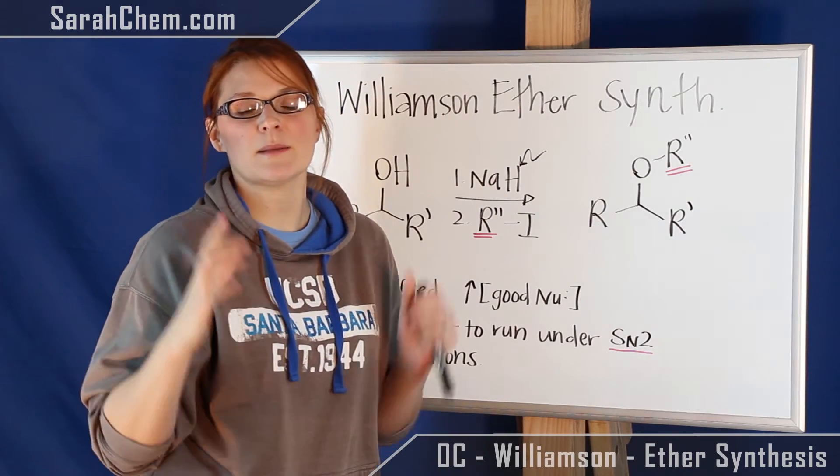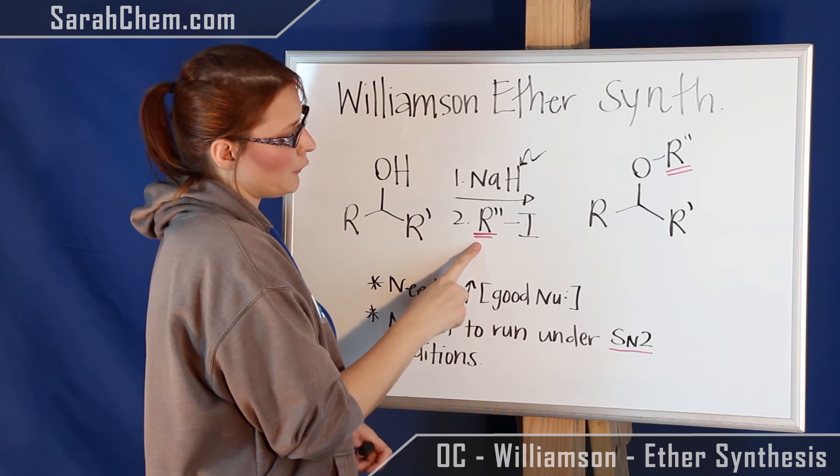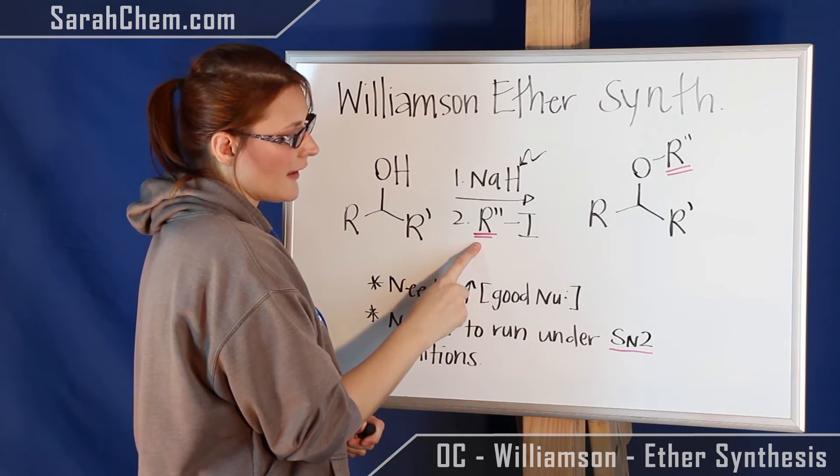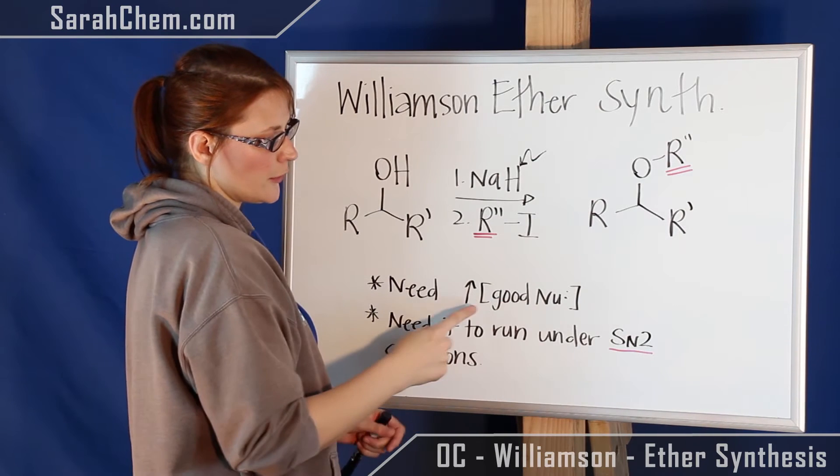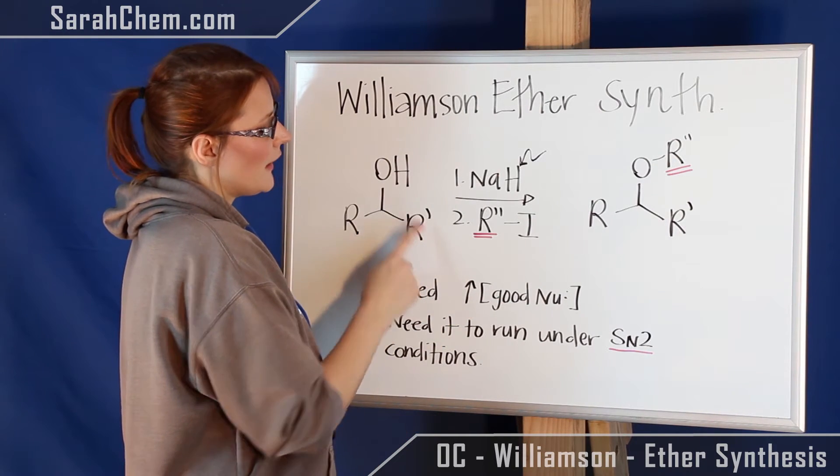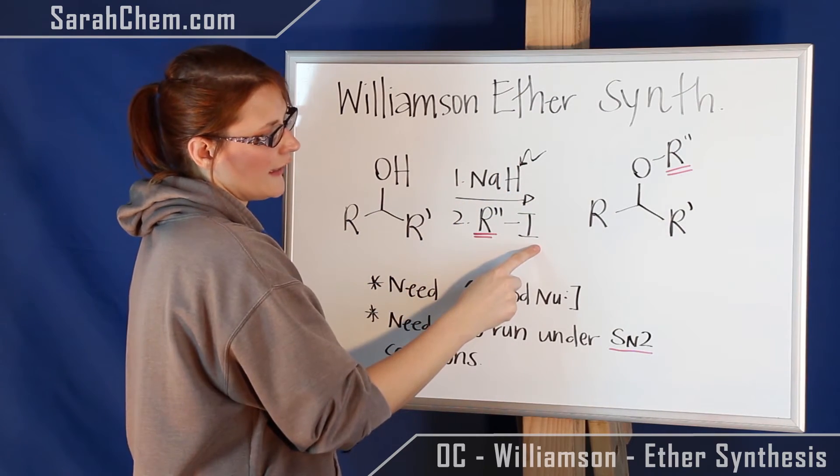The reason that's important is it's going to create our nucleophile, which will then attack the second group here, which is our alkyl halide. In this reaction we're running an SN2 mechanism, so we want to use a good nucleophile. This is going to attack that R group and kick off that iodide.